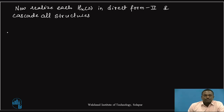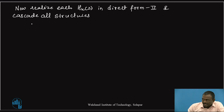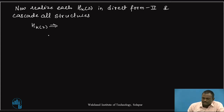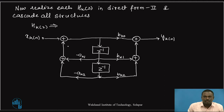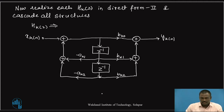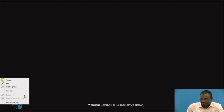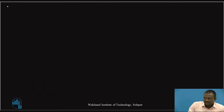Now I will show the direct form 2 structure for one of the subsystems. Let us take that subsystem as H_k(z). I will show the direct form 2 structure for this H_k(z) subsystem. We will take one example to understand how to draw the cascade form realization for the given system.